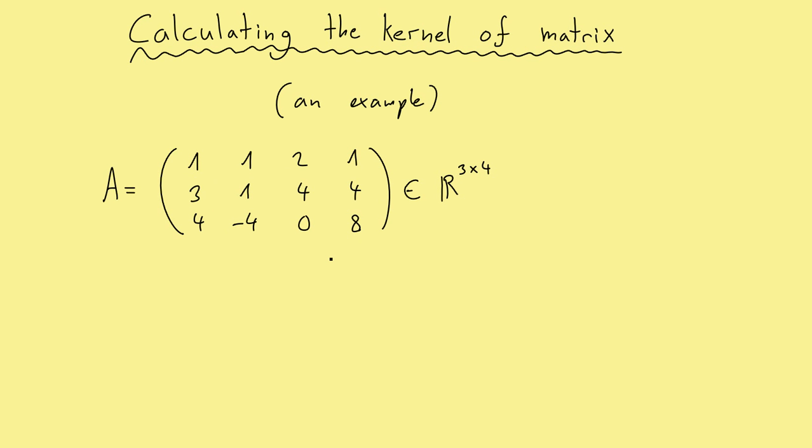However, first of all, you have to know what the kernel is. So the kernel of a matrix A is by definition the set of all vectors that are sent to 0 by this matrix. So that means that we have here all vectors x and they come from R4. Since we have 4 columns here, we need a vector with 4 rows.